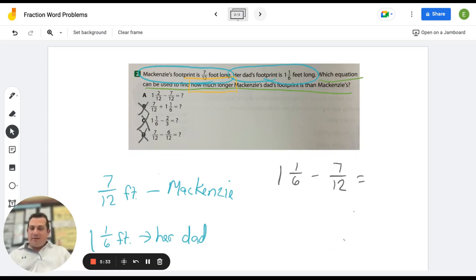So, just by process of elimination, my answer should be A. So, let's take a look. If we're looking at A, could that be one and two-twelfths minus seven-twelfths? Well, one and two-twelfths, this is one and one-sixths. So, I would say to myself, is two-twelfths equal to one-sixth?